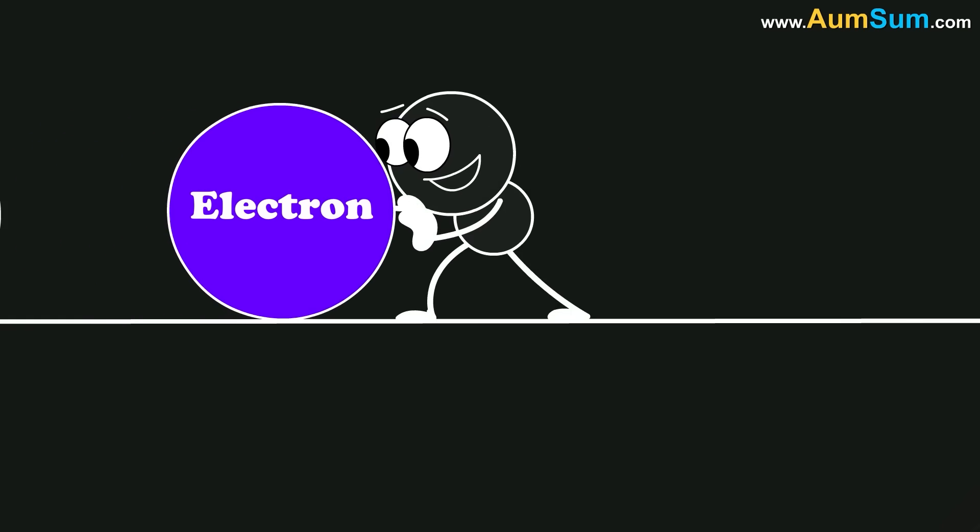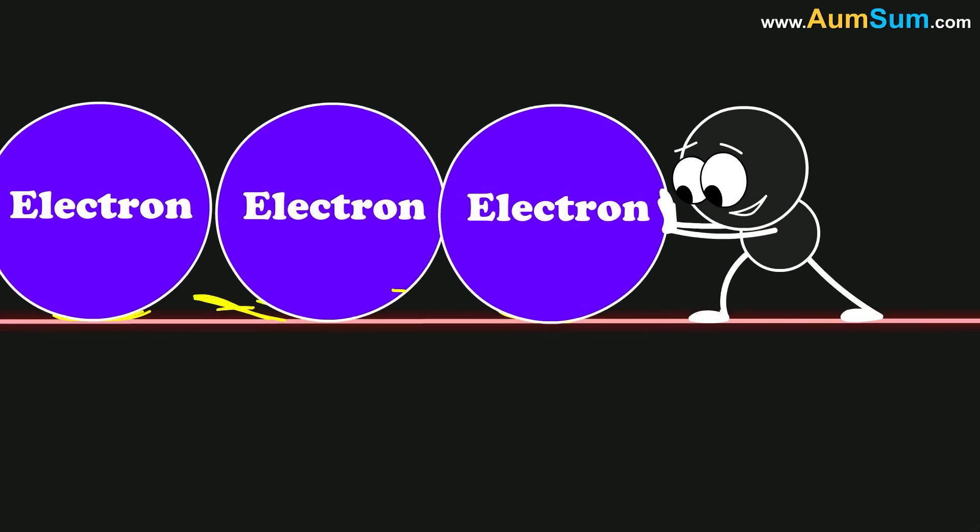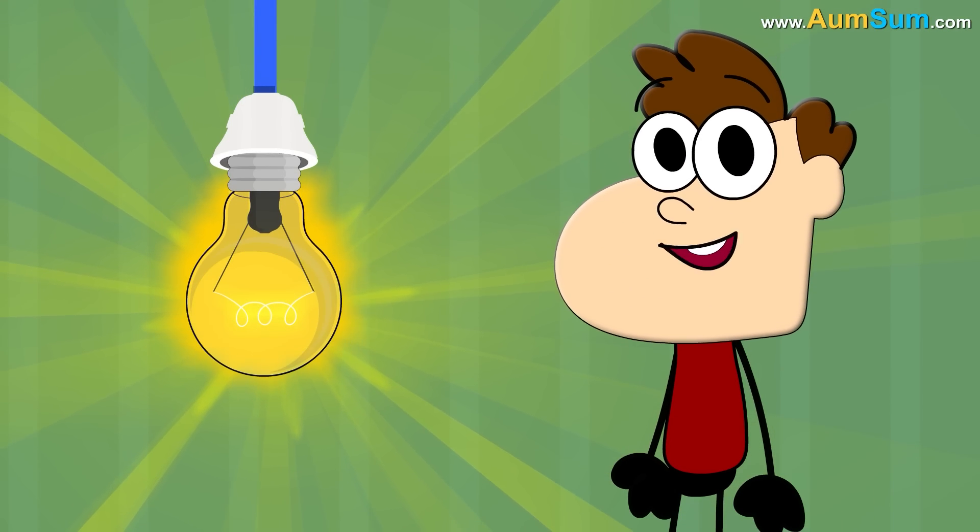Now, this hindrance to the flow of electrons leads to the creation of friction, which causes the filament to heat up and start glowing. So, this is how a light bulb glows.